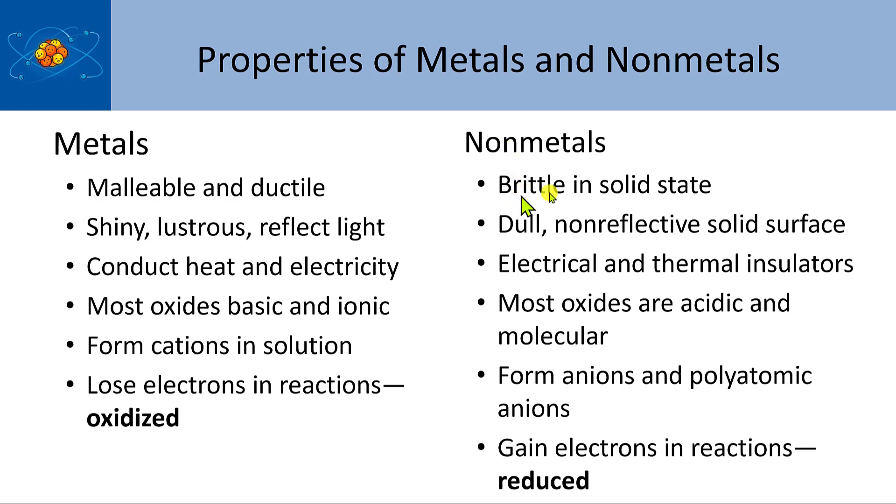Non-metals are brittle in their solid states. They're dull and non-reflective. Many of them are gases. Many of the non-metals are gases in their natural state. They're not very good at conducting electricity or heat. And most oxides are acidic and are of a molecular nature rather than an ionic nature. They form anions and polyatomic anions. And they generally tend to gain electrons and are reduced in chemical reactions. And so these are what we mean by properties of metals and non-metals.